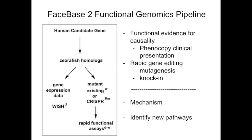For the purpose of FaceBase, we draw the line at rapidly establishing causality for human candidate genes and doing first-order phenotype analysis for gene function annotation. Beyond that — for mechanism and pathway work — that will emerge from additional genes being annotated and from the collaborative work to figure out gene networks.